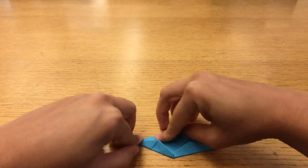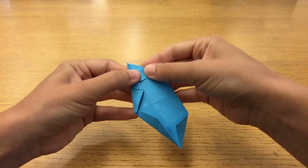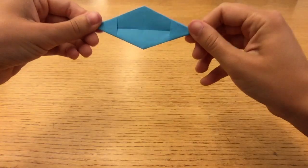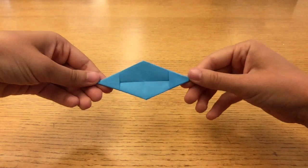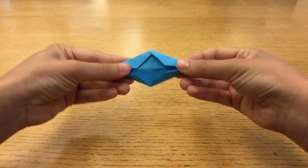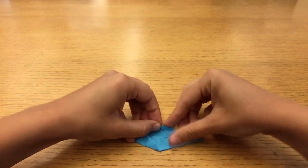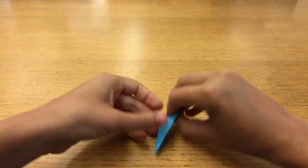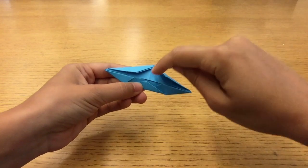Do the same thing on the other side, folding over the edge and bringing it to the center line. Now we have this diamond shape. It still has two pockets on the bottom. Time for the last two folds. Bring the point of the overlapping corner into the center guideline. And do the same on the other side, lining up the point to the center.